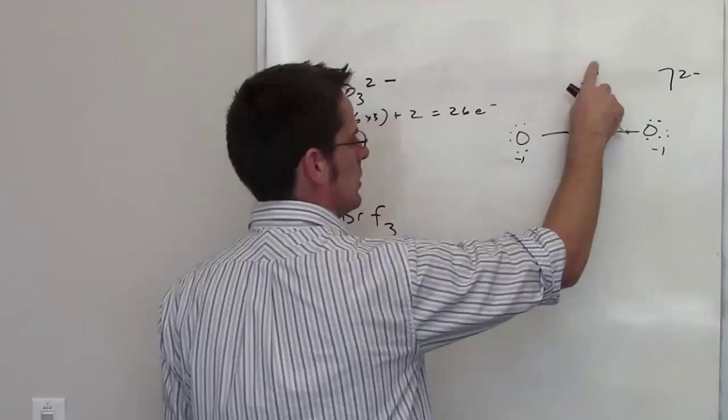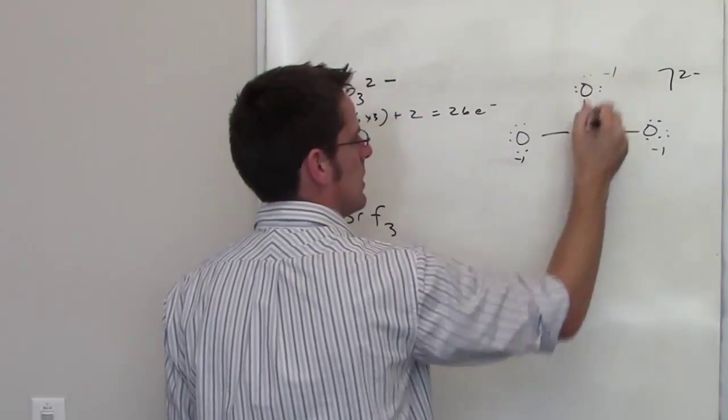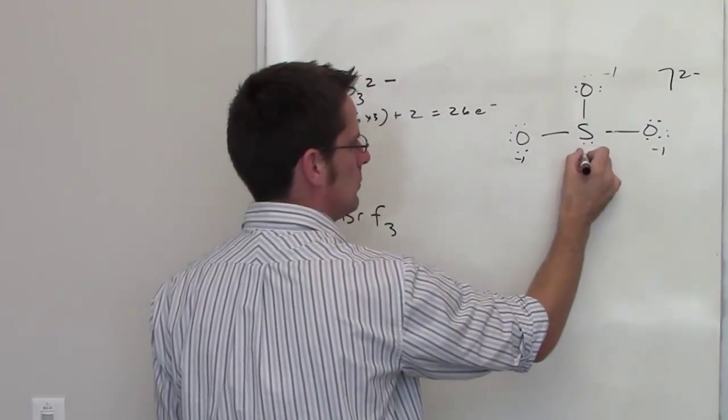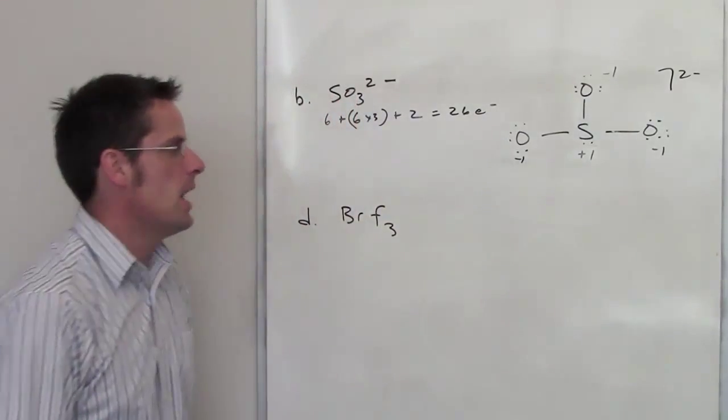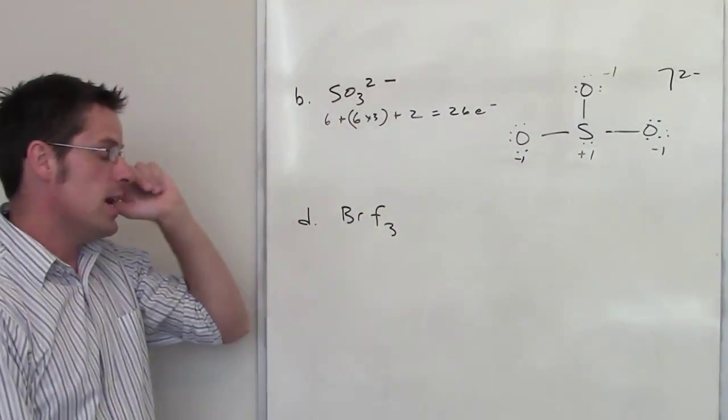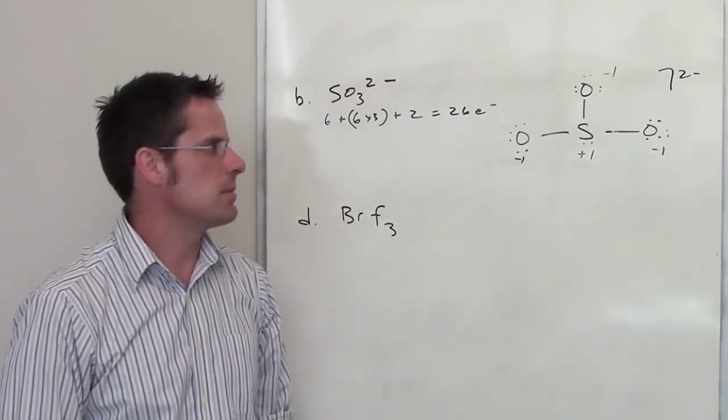The formal charge here on the sulfur is zero, so it gives you an overall lower formal charge than what you'd get for the other Lewis structure that I drew, which has a formal charge of plus one here on the central atom and negative one up here on the upper oxygen. In either case, both Lewis structures are acceptable.